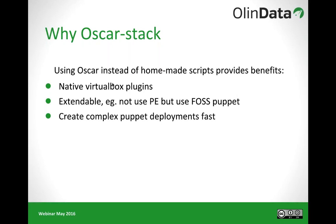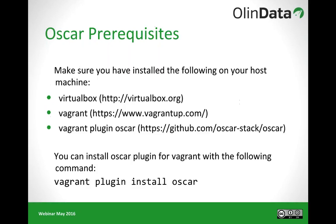There are a number of prerequisites. You have to make sure that you have VirtualBox installed on your host machine, Vagrant — you can find it at vagrantup.com — and a Vagrant plugin called Oscar. Once you have Vagrant installed, you can just say 'vagrant plugin install oscar', as you see here at the bottom of the screen.